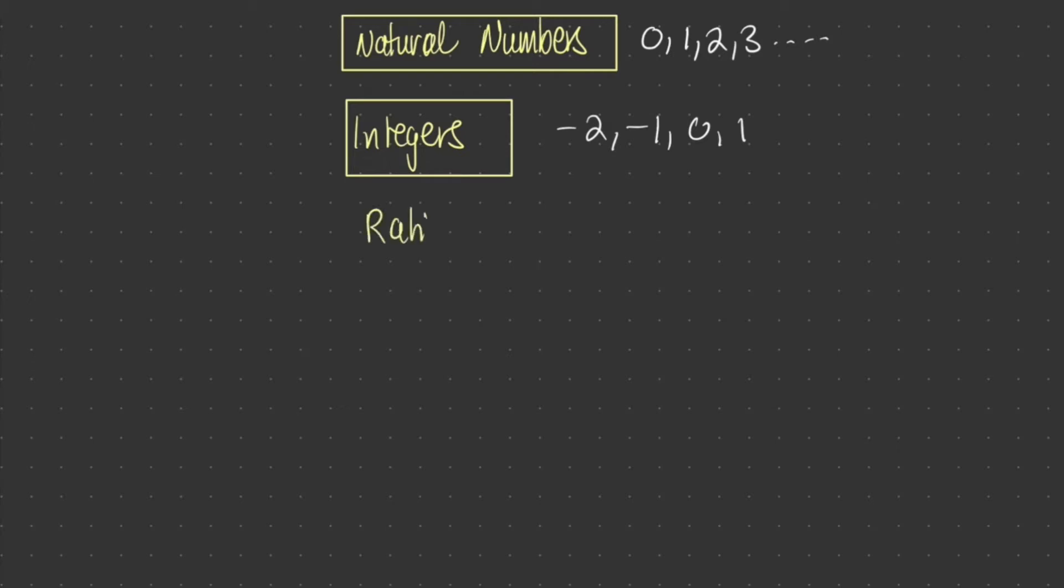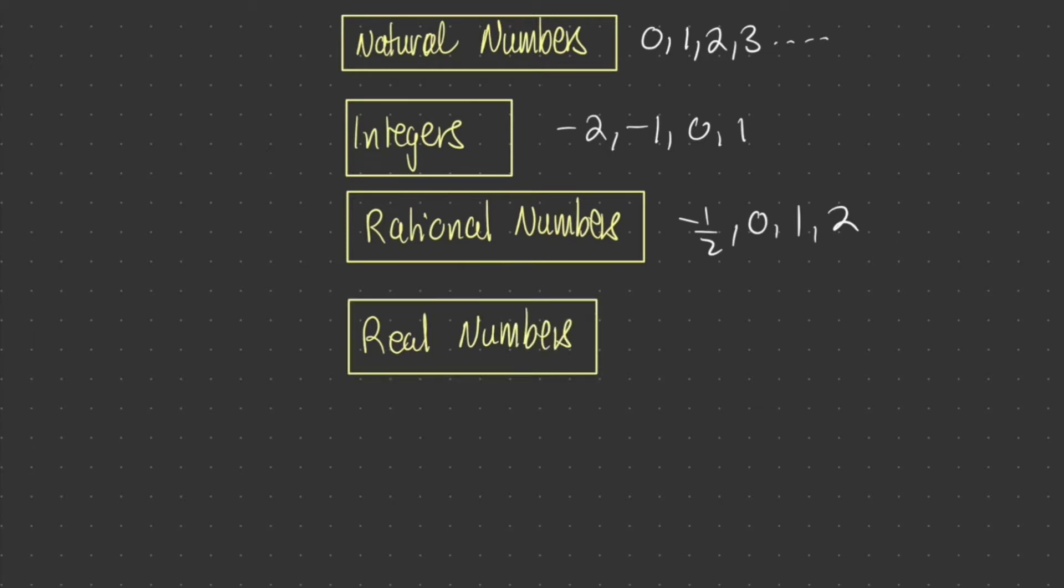Then we also have rational numbers. These include your fractions, so negative half, zero, one, two and so on. We also have real numbers and these include pi, e, square roots, zero, negative and the positive numbers.